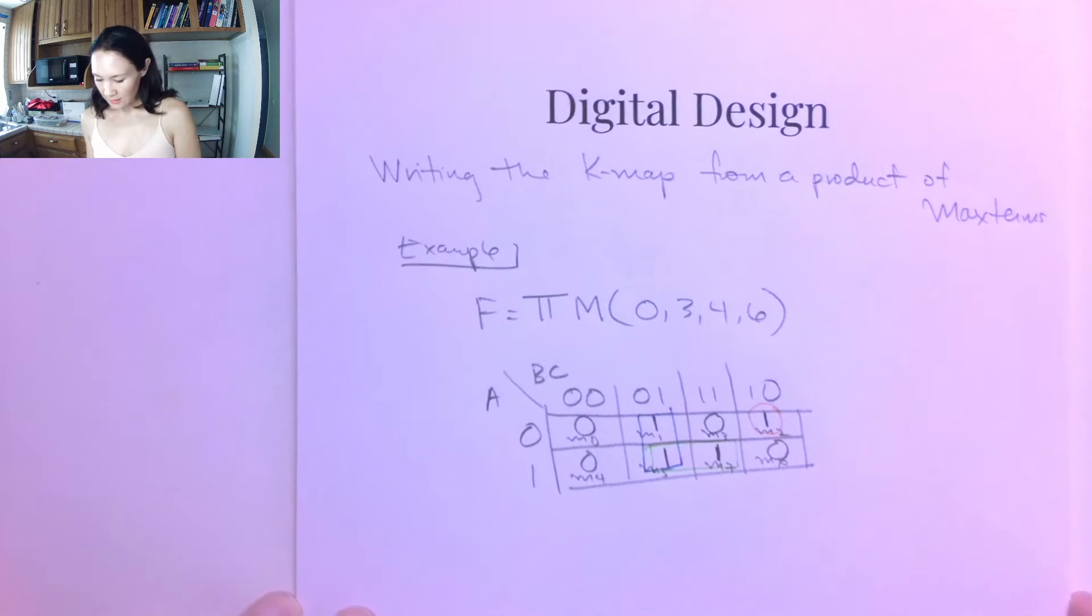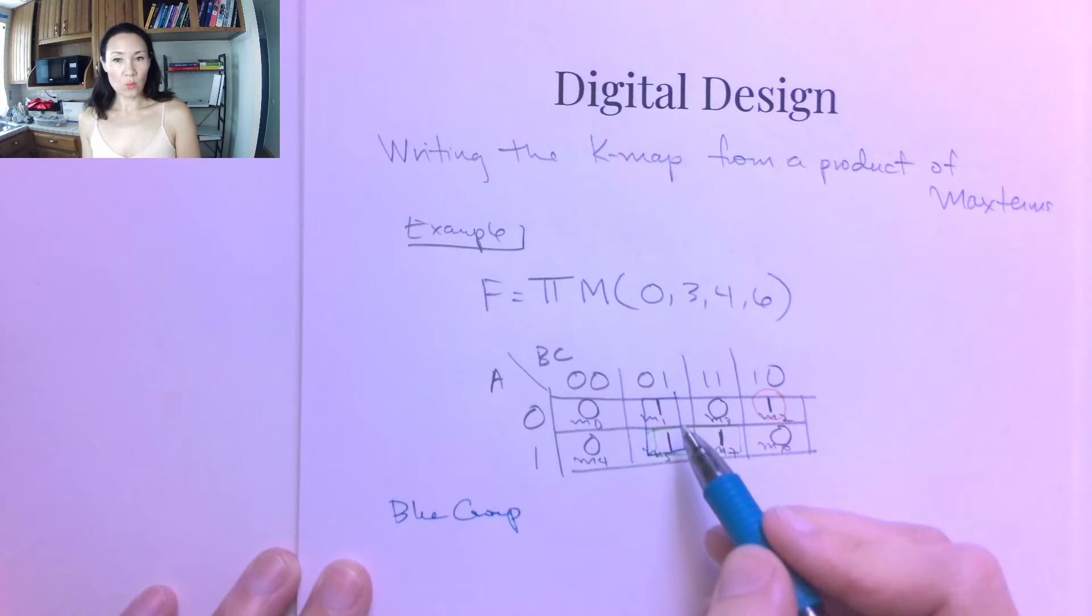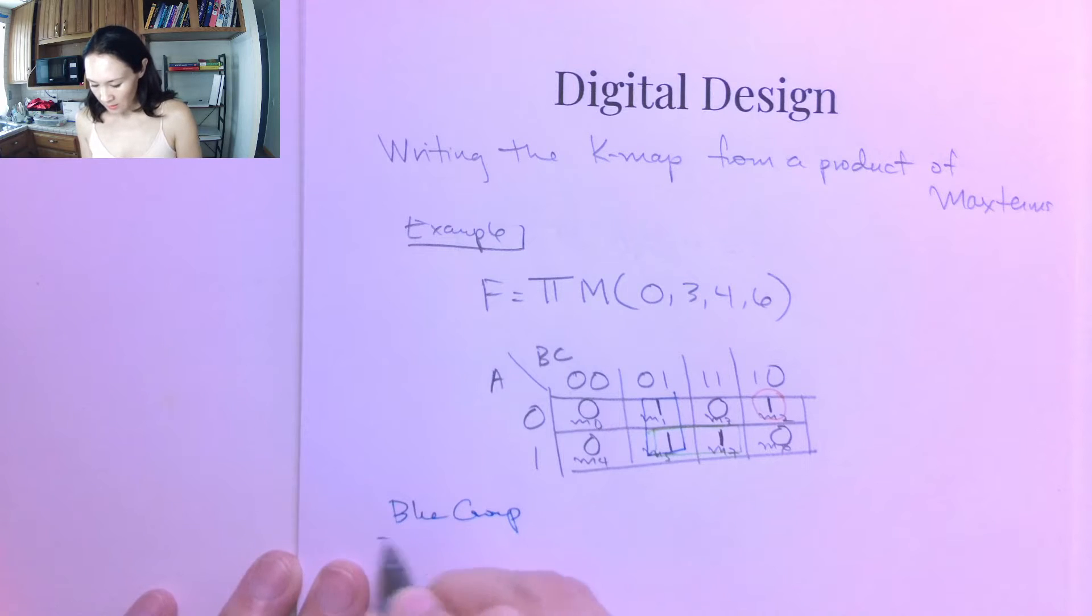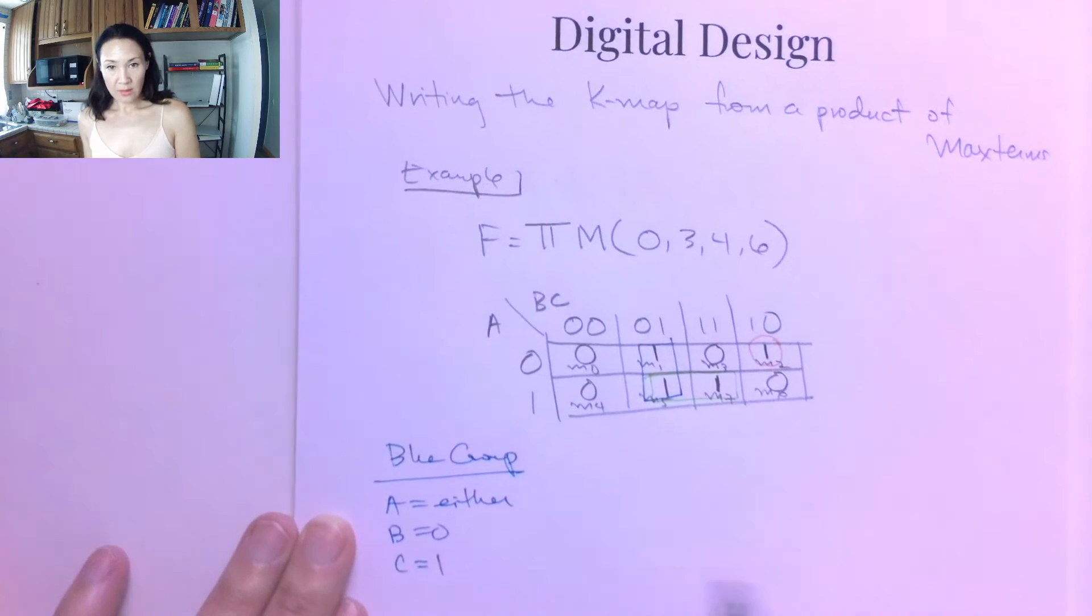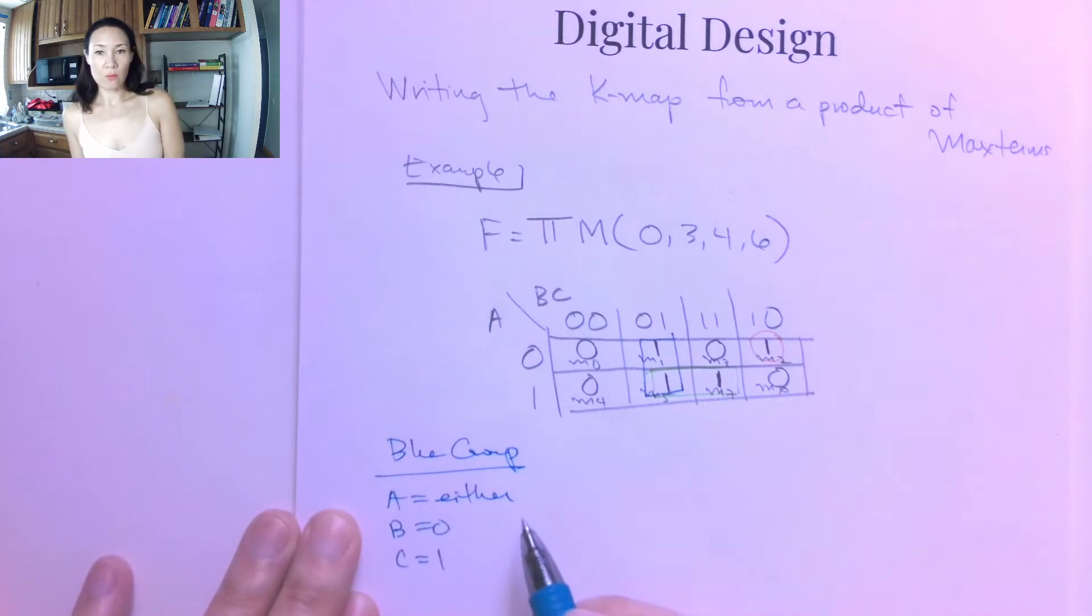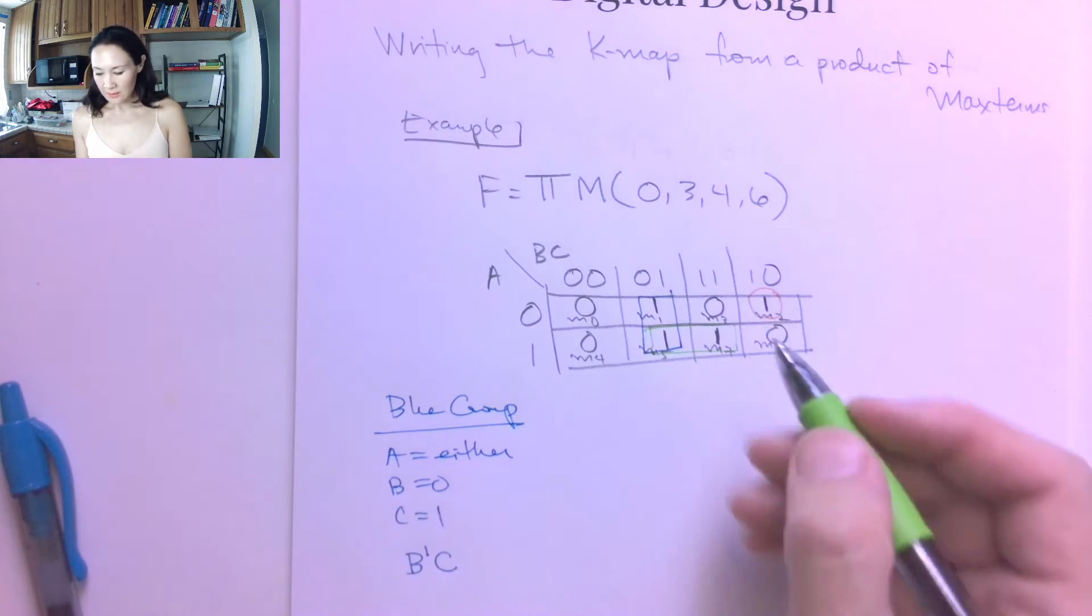Let's go through and write out what our product terms would be. For the blue group, what's true for these ones? Well, A can be either 0 or 1, and we'll have a 1 in the blue group. We have B is 0, and C must be 1. So if A can be either, that means we can reduce it out of our function, but we just need B to be 0 and C to be 1. So B-not-C is the literal representation of that case.